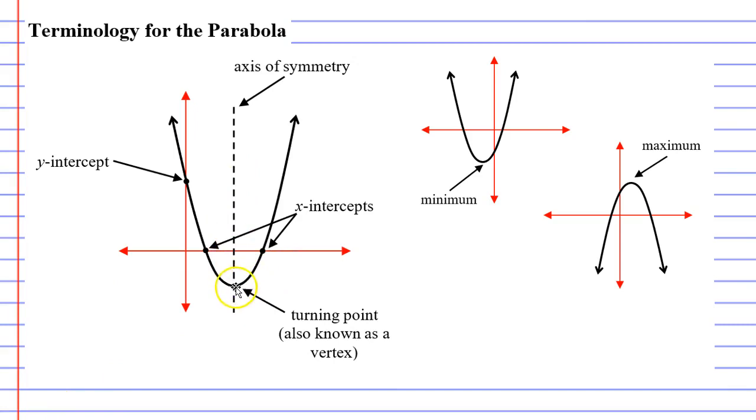We also have a point known as the turning point, or also known as the vertex. If I was to travel from left to right, following my curve, you'll notice that the turning point seems to be a point at which the graph seems to change direction. It's starting by going down, and then it turns and starts to go up.